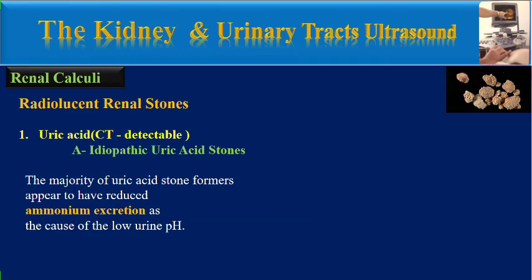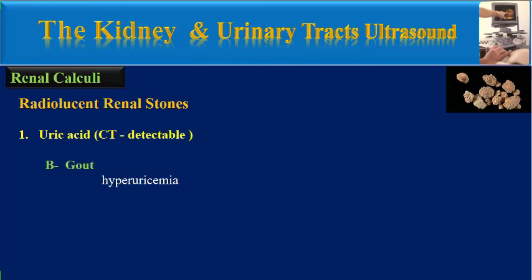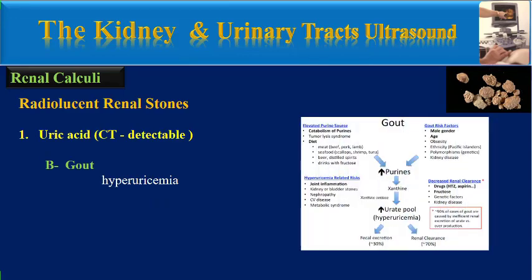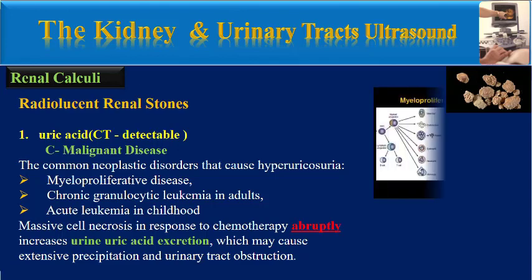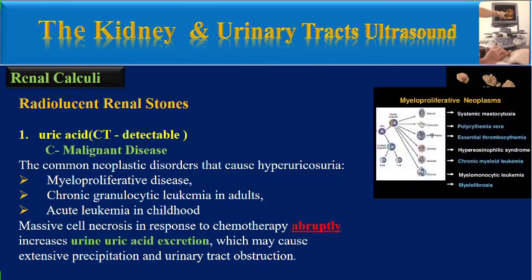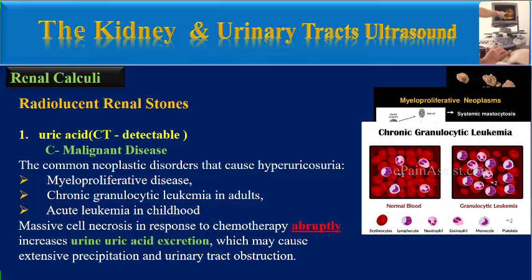What is the clinical classification of uric acid nephrolithiasis? Uric acid stone-forming conditions include a variety of disorders involving disturbance in uric acid metabolism, renal uric acid handling, and urine pH, especially acidic urine. The first class is idiopathic uric acid stones; the majority of uric acid stone formers appear to have reduced ammonium excretion as the cause of low urine pH. The second class is gout patients, who have hyperuricemia.